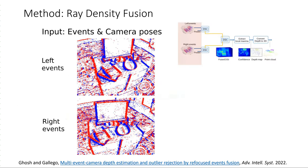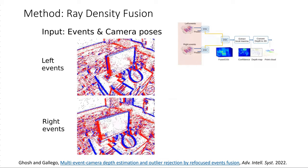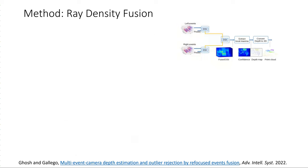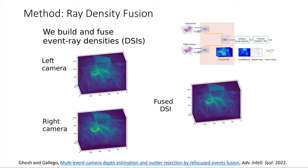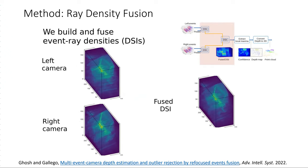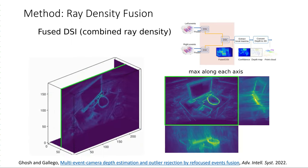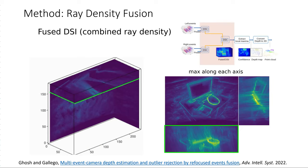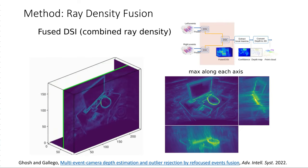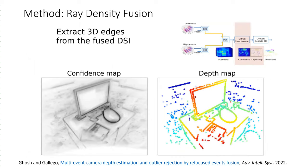Using known camera poses, stereo events are back-projected as rays into individual event ray densities called DSIs. These individual DSIs are then fused using element-wise operations such as the harmonic mean. Several fusion functions are proposed in the paper. Each voxel in the fused DSI counts the number of back-projected rays intersecting at that location. Sweeping across the depth axis, the edge features come into focus at the correct depth plane. The depth and its confidence at each pixel are extracted using local maxima of the fused DSI.